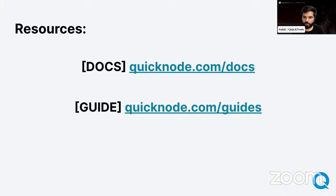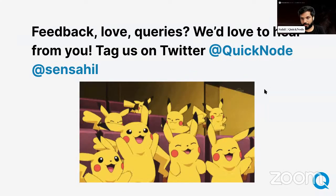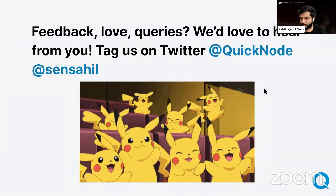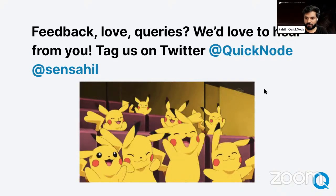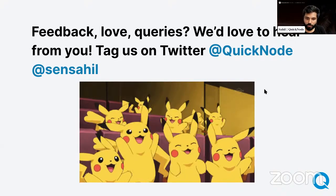QuickNode also has a lot of resources for developers. You can go to quicknode.com/docs for our version of Avalanche docs, and quicknode.com/guides for developer guides written by our technical writers and developer relations team. These guides range from beginner level to expert level, covering your entire Web3 journey.